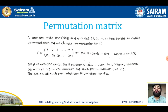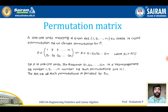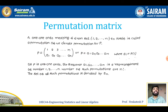Next is the permutation matrix. A 1-1 onto mapping f from the set {1, 2, …, n} onto itself is called a permutation, denoted by the matrix P = [1, 2, 3, …, n; a1, a2, a3, …, an], where a_i = P(i). Since P is 1-1 onto, the sequence a1, a2, …, an is a rearrangement of {1, 2, …, n}. The number of such permutations is n!, and the set of all such permutations is denoted S_n.